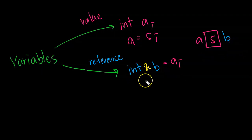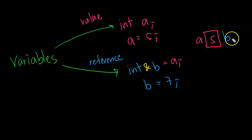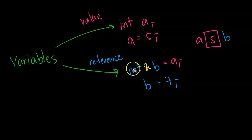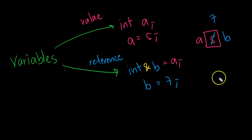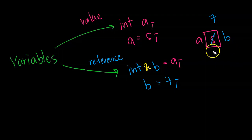Now let's say you have another statement: b equals 7. B can still act as a normal variable where we can assign a value. The only difference between reference semantic and value semantic is that reference semantic is a new name we give to an existing object. So when we say b equals 7, it is going to replace the value 5 with 7. This will also change the value of a, because a and b are sharing the same object.